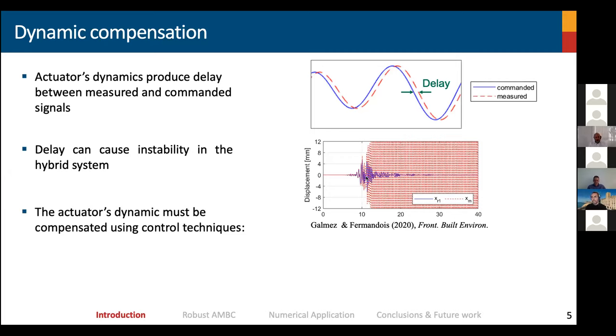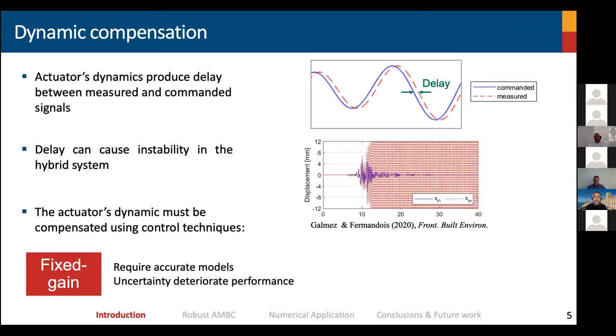There is a lot of research in the field that tries to account for these dynamics and compensate them to avoid instability problems. We do that using control techniques, and we can classify control techniques in two ways. One is controllers that have fixed gains. Usually these controllers require accurate models of what we want to control, and if there is uncertainty, this could deteriorate the performance. The second type are adaptive controllers. The adaptive controllers are less dependent on the model, and adaptation can improve performance, but it is not necessarily independent of the model.